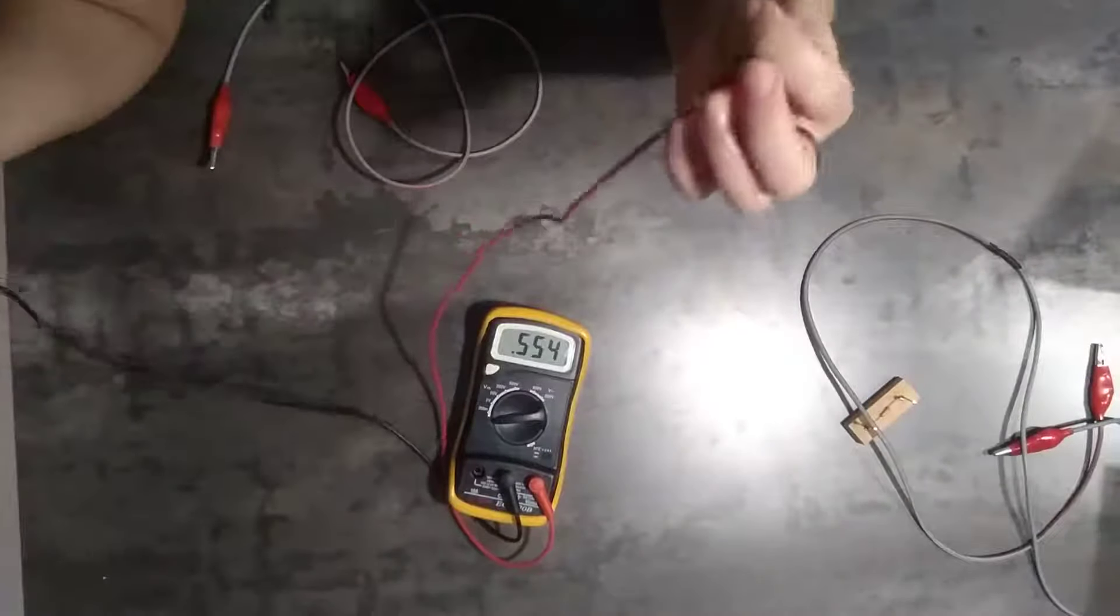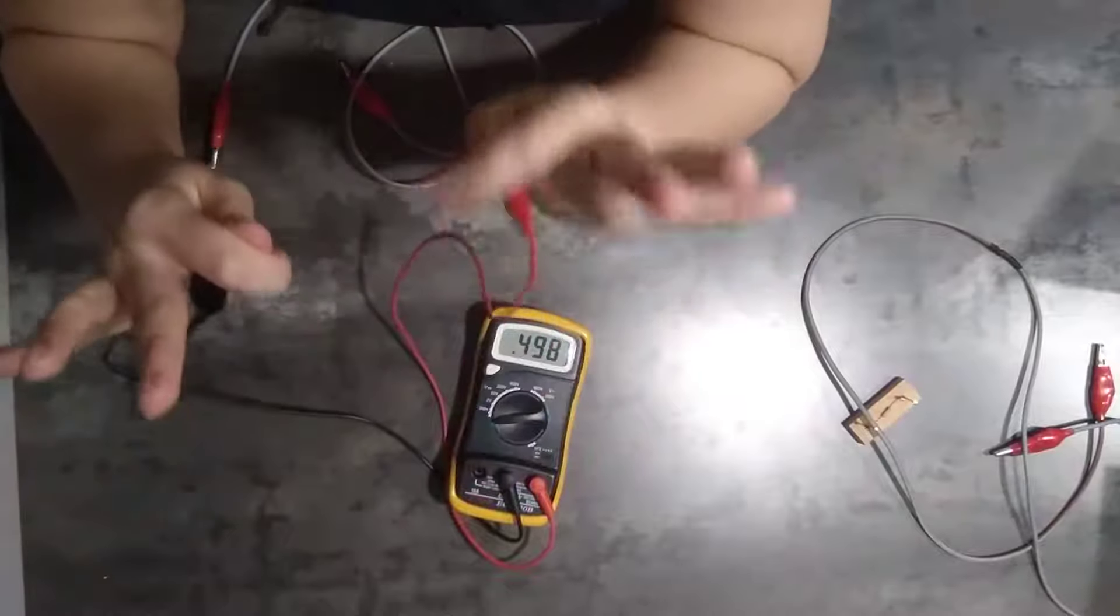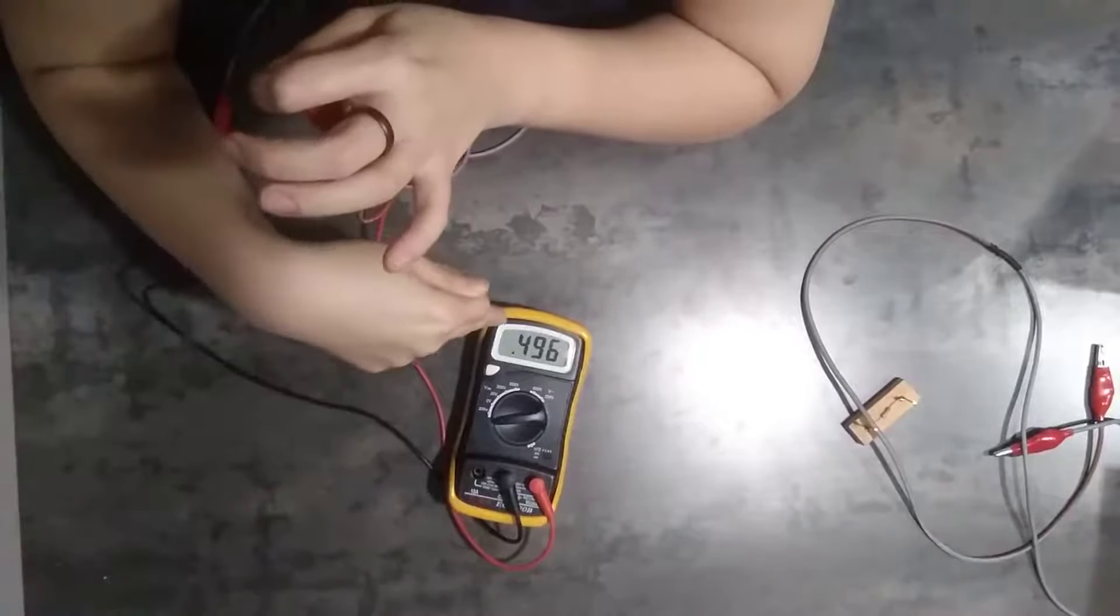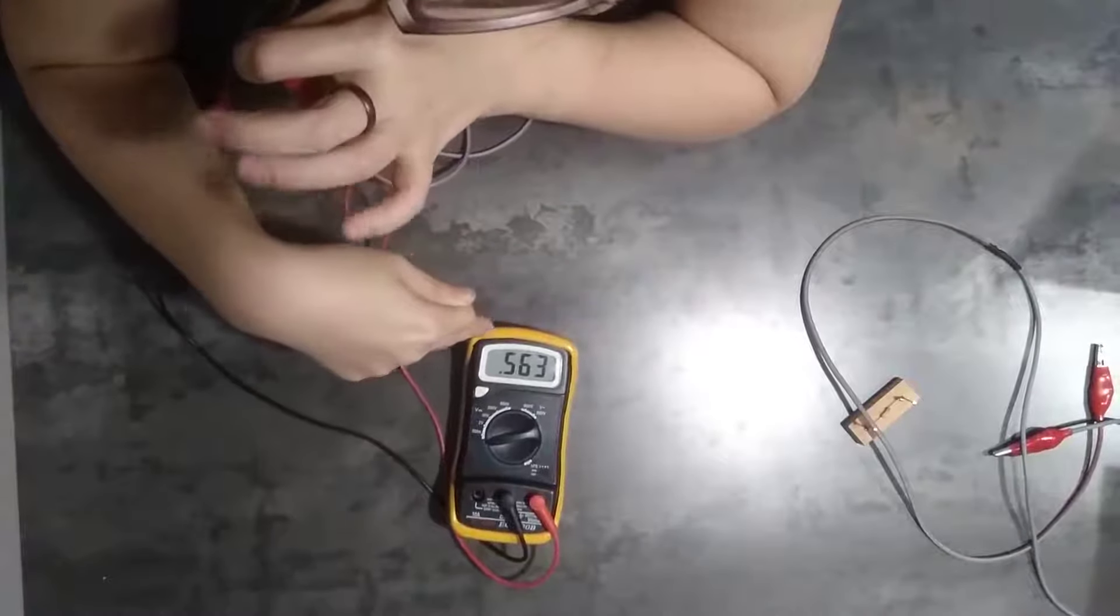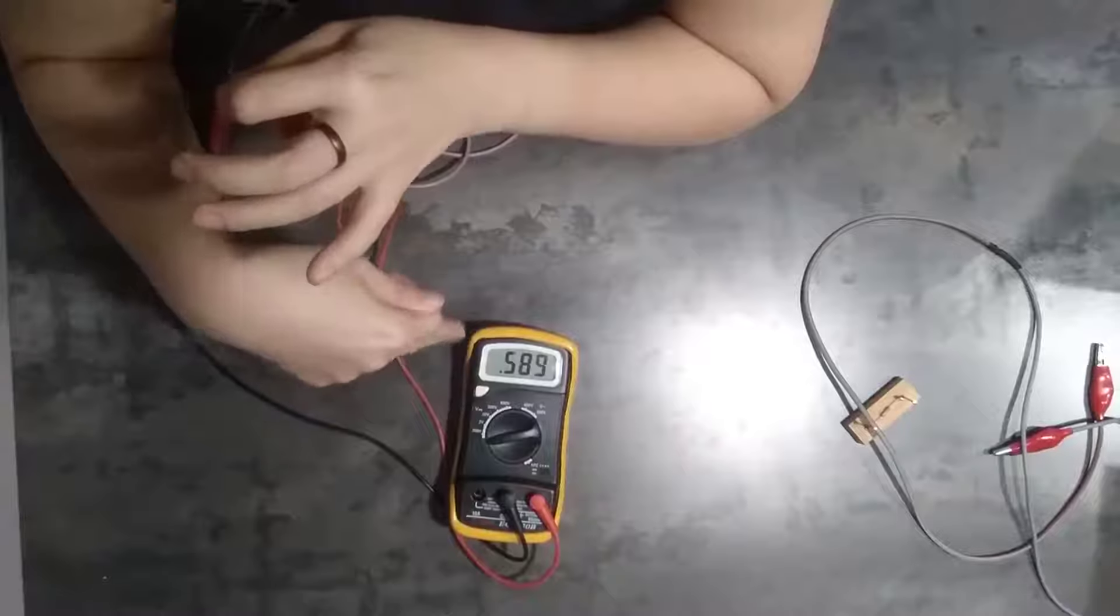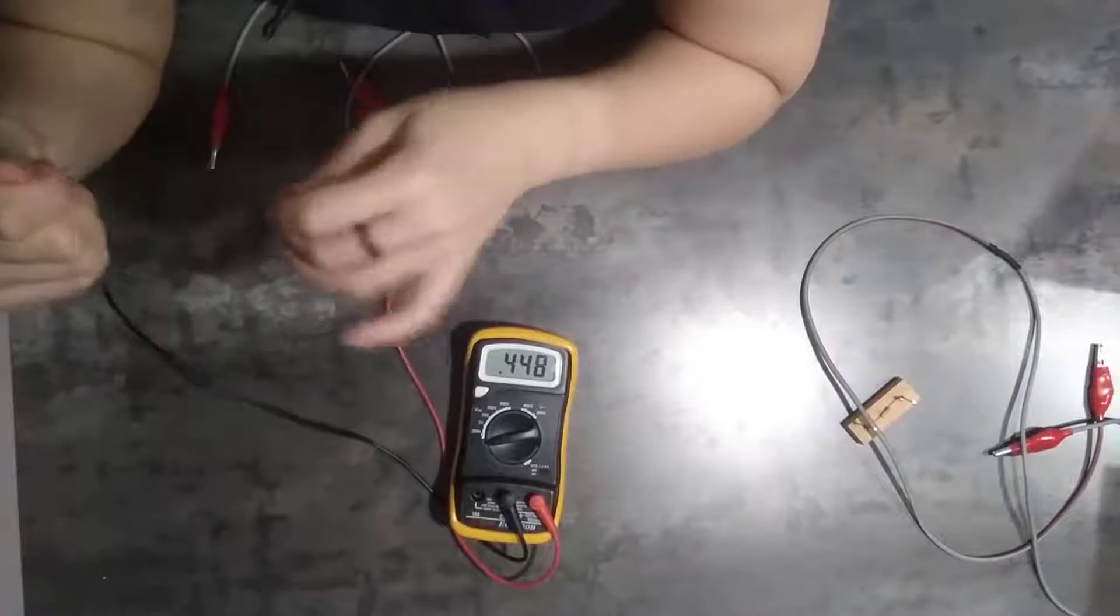So if I were to hold on to it with my hands this way, you will notice that the reading, number one, is fluctuating and number two, you can actually get a reading. So the reading of me, a human body at my current hydration level and muscle mass is about 0.5 mega ohm.